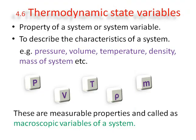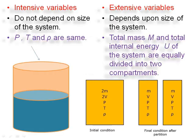Now, the first point is thermodynamic state variables. These are nothing but the properties of a system — also called system variables — used to describe the characteristics of a system. For example: pressure, volume, temperature, density, and mass of the system. We call such variables as state variables. These are the measurable properties of the thermodynamic system, and therefore we call these macroscopic variables of the system.